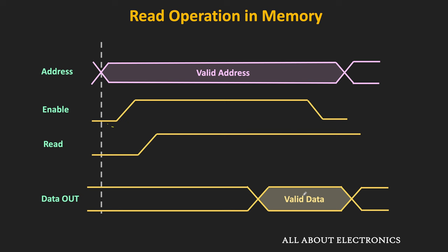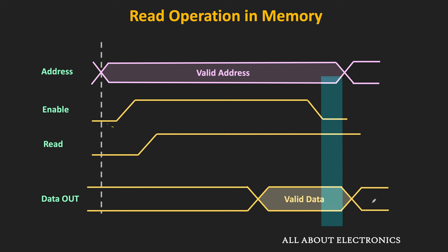Once the read operation is performed by the CPU, the enable signal is made low. Until the enable signal gets deactivated, both the address and data signals should remain stable for a short time.